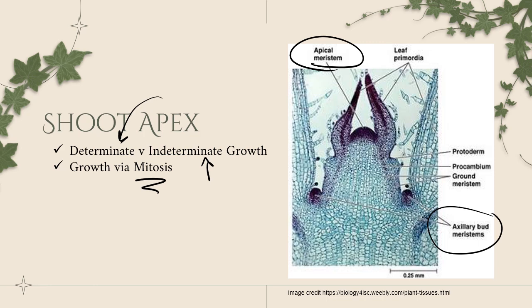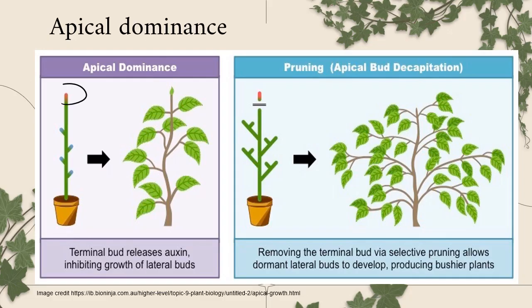We're going to look at apical meristem versus axillary meristem — a pretty cool thing for gardeners. The hormones in the apical meristem, that tiny little tip of the plant, are quite dominant. They drive growth upward while inhibiting lateral growth. But if we chop that off — if we prune our plants and literally decapitate that apical bud — then there is no more inhibition of those axillary meristem buds.